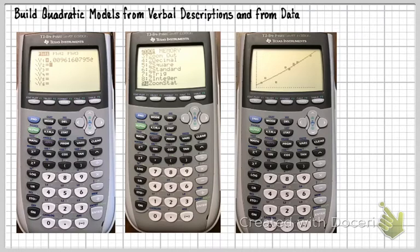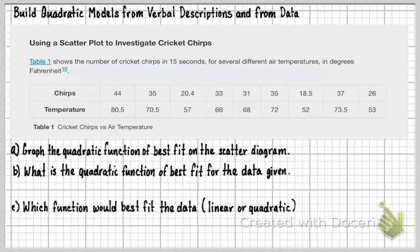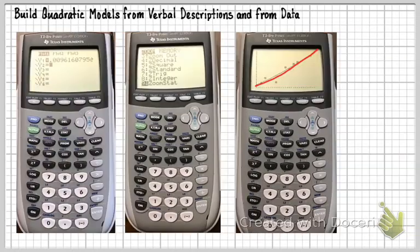I then hit my zoom, and I go down to Zoom STAT. And then I push graph, and then I'm here, and this is what pops up. So here's that quadratic function, and that's the best one for those points. So let's just take a look at what this was asking us for. Part A said graph the quadratic function of best fit on the scatter diagram, and that's what we did here. That's what this is. This is that graph.